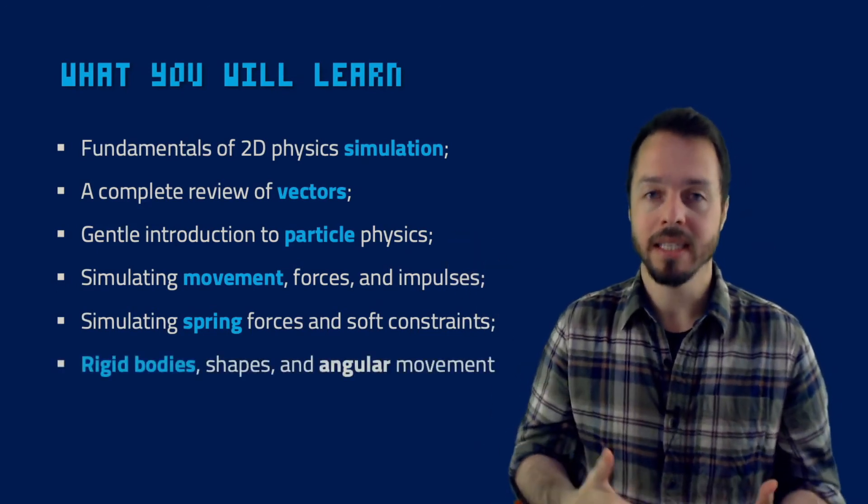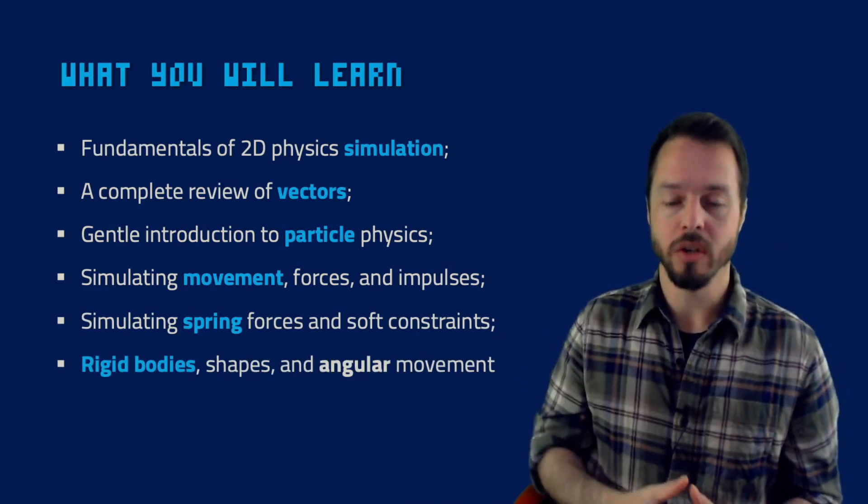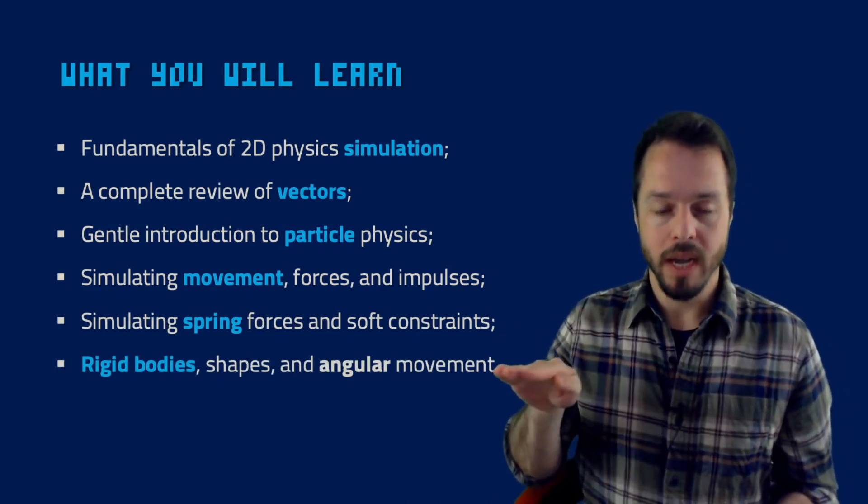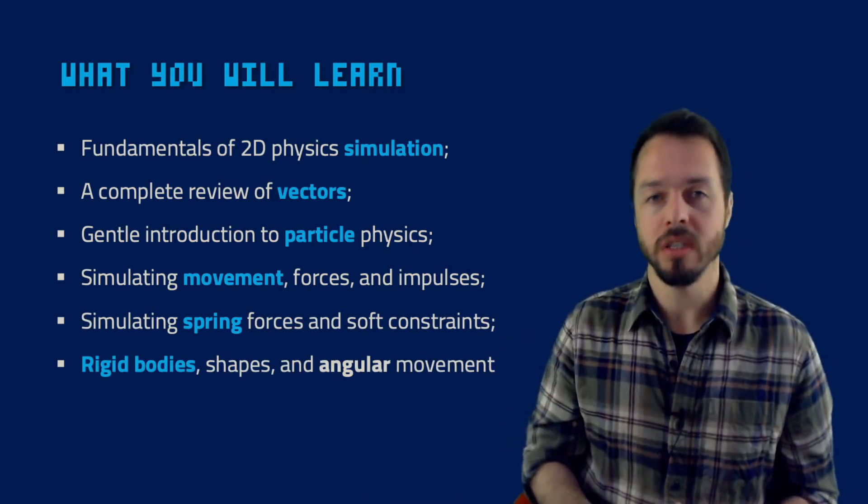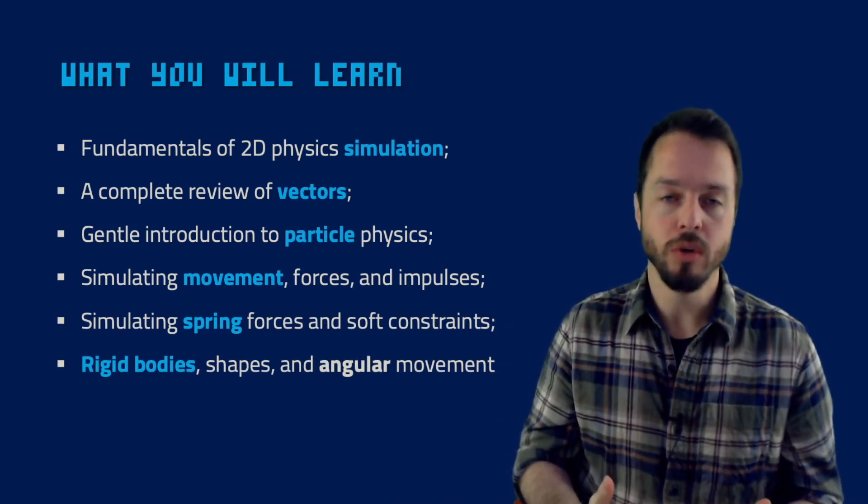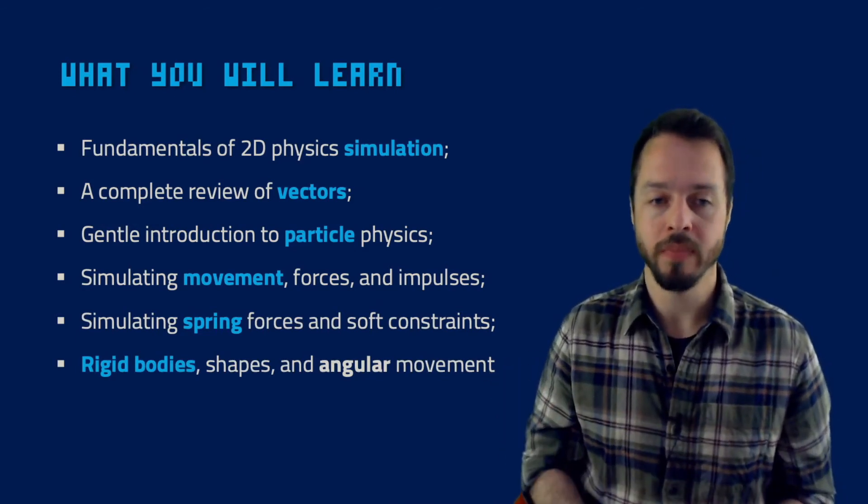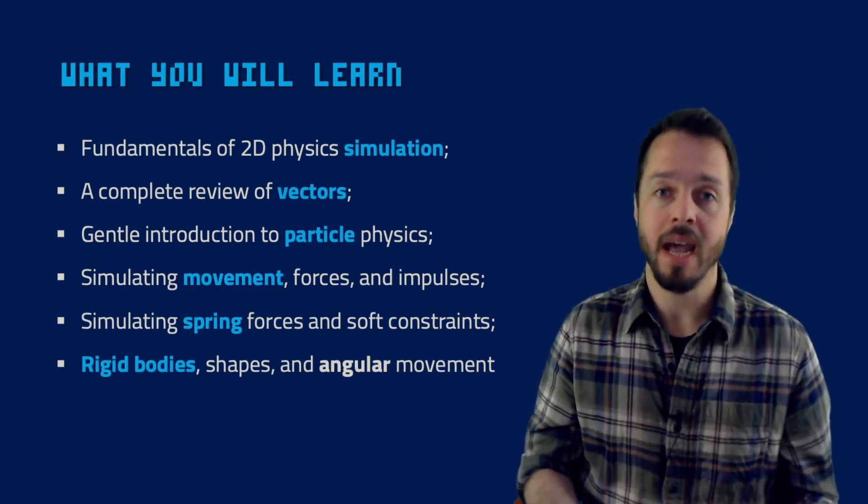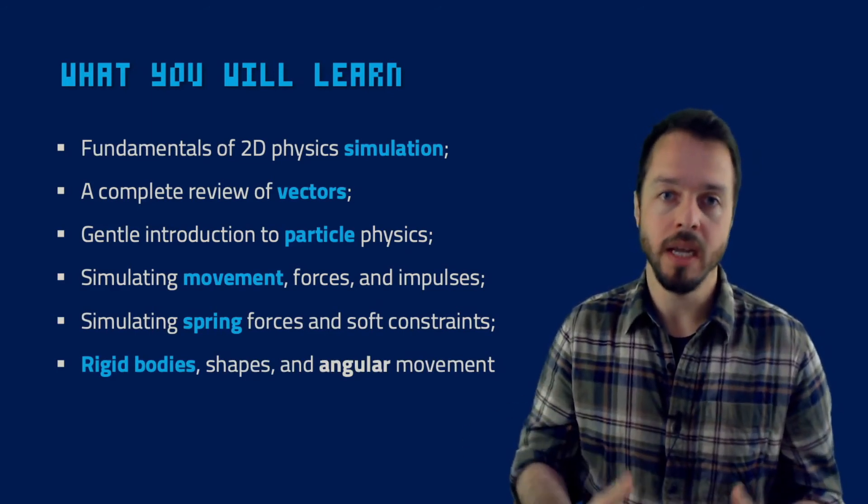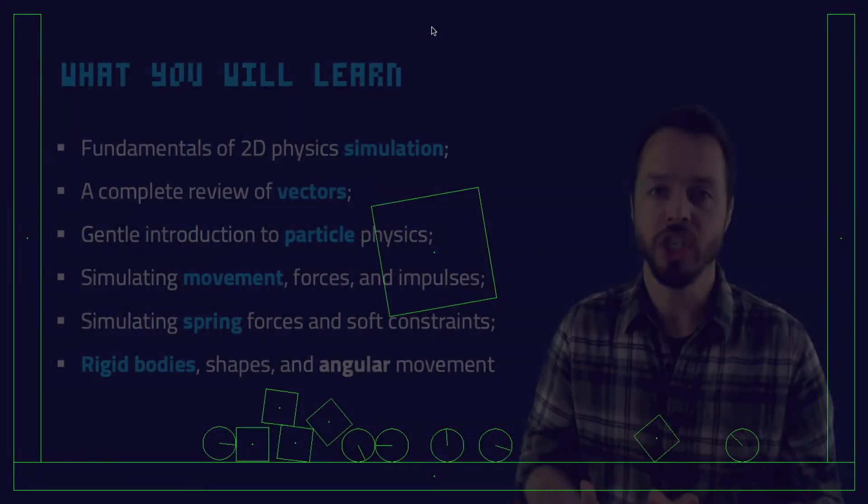And the next step, this is almost a divider here. We can have this divisor here on this course. Right now, as we leave particles, we start to talk about rigid bodies. This is a super huge topic, super important topic. This is the core of our 2D physics simulation. Rigid bodies, these bodies that have now shapes. They can be circles, they can be polygons, they can be boxes, rectangles. Our objects, they will have a shape.